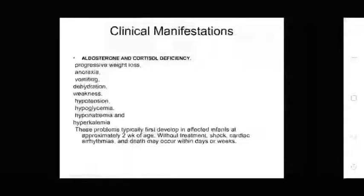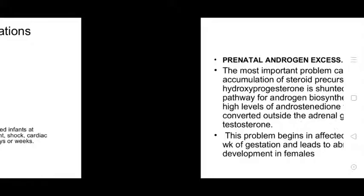Clinical manifestations of aldosterone and cortisol deficiency include progressive weight loss, anorexia, vomiting, dehydration, weakness, hypotension, hypoglycemia, hyponatremia, and hyperkalemia. These problems typically first develop in affected infants at approximately 2 weeks of age. Cardiac arrhythmias and death may occur within days to weeks if untreated.